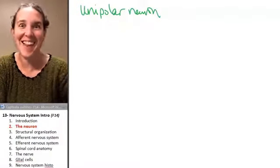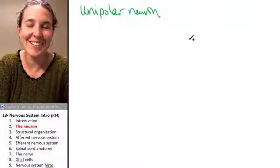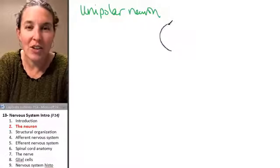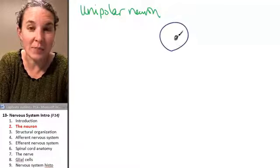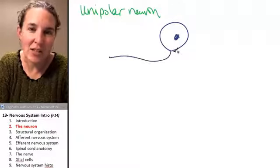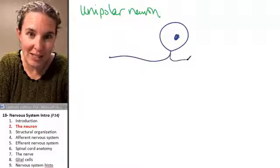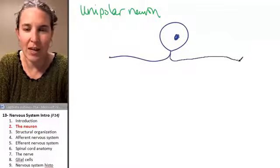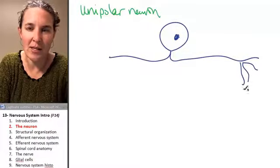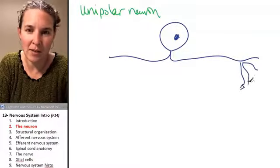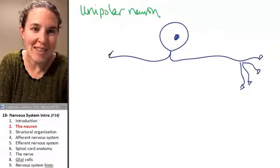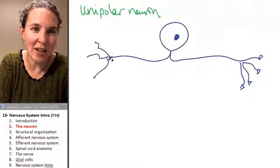Say that 30 times fast. I'm not going to. In a unipolar neuron, you have a cell body just like normal, but look at this. It's called unipolar because it's like one thing coming out of here, and I'm not drawing it as, these are my synaptic knobs down here, right? And these are my dendrites up here.